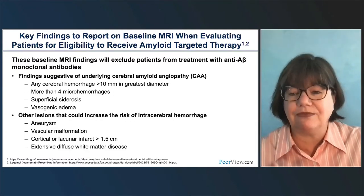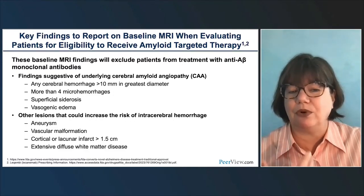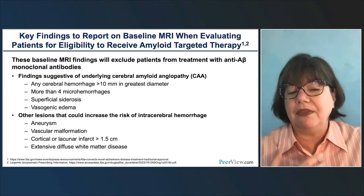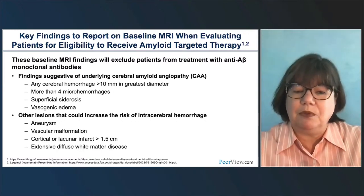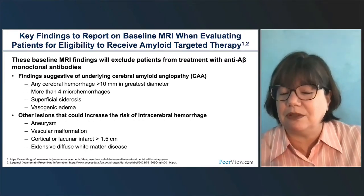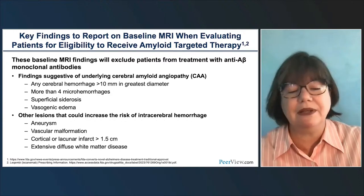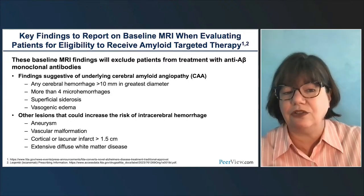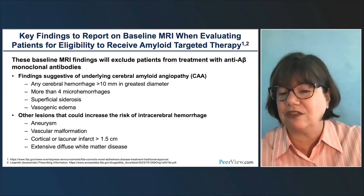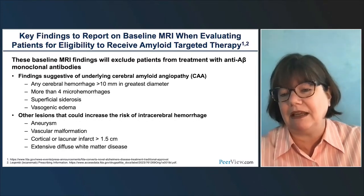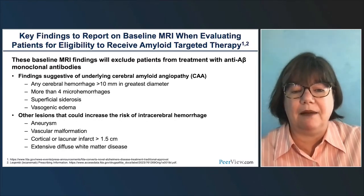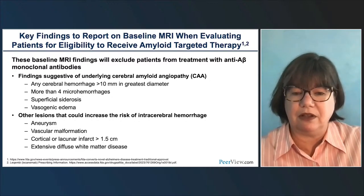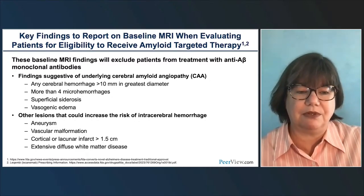Multiple MRIs are recommended on a schedule specific to each drug as advised on the label. It's very common for someone to have four or five MRIs during the course of their first few weeks or months of therapy. ARIA symptoms include headache, confusion, dizziness, nausea, vomiting, fatigue, blurry vision, gait disturbance, or rarely seizure. These are not very specific symptoms, and in a population of elderly patients with mild cognitive impairment due to early Alzheimer's disease, they can be pretty common. These symptoms will trigger additional MRI visits.